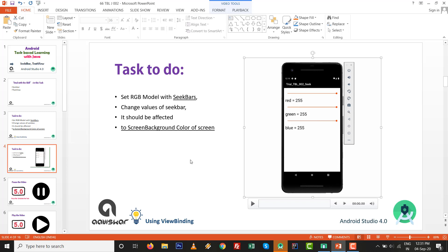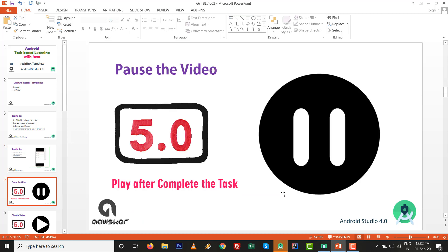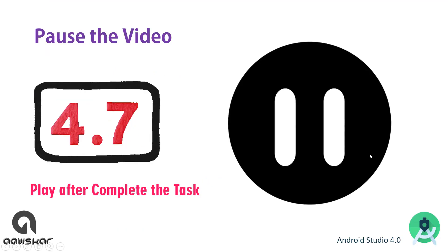It is an easy task but also a little bit logical. The screen color will be affected not only by red, but by the combination of all three SeekBar values. That is the basic logic behind this exercise. Pause the video, complete the task, then play the video again.